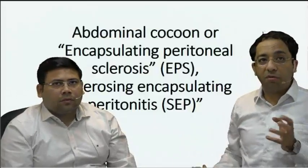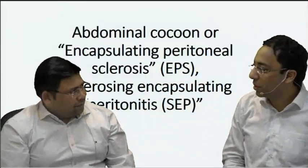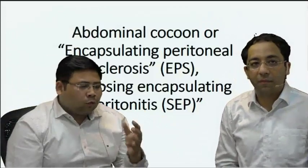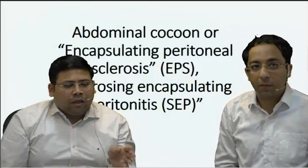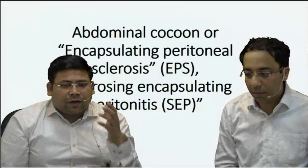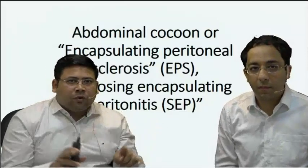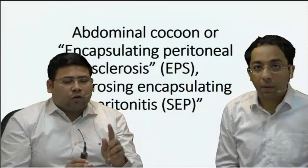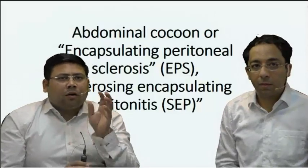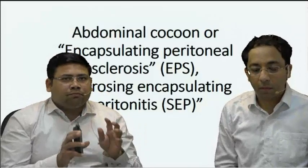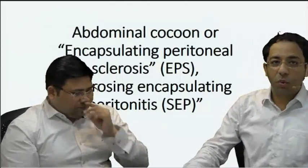This is what has been traditionally called the abdominal cocoon, but the new name for this would be encapsulating peritoneal sclerosis. Earlier we used the term sclerosing encapsulating peritonitis. For intestinal obstruction specifically related to a cocoon, we often use the term peritonitis chronica fibrosa encapsulata. If you break the term, you get everything: it is fibrous, chronic, and has led to intestinal obstruction. Basically, a cocoon is a fibrous thickening around conglomerated bowel loops, circumscribed 360 degrees all around.